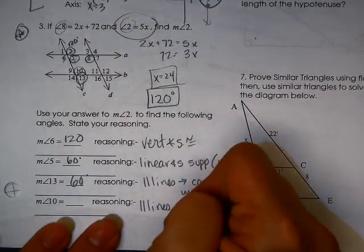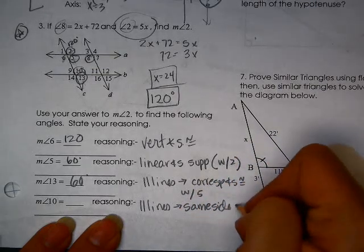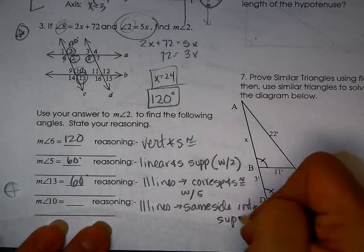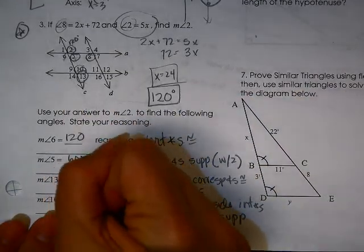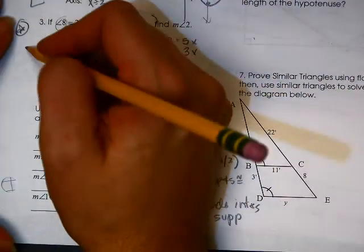So that's what I'm going to go ahead and write, just so you can make sure that you're remembering all the things that you need. So same side interior angles are supplementary, and that gives us our 120. So again, there are a lot of different things that you could actually do on these problems.